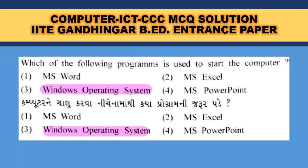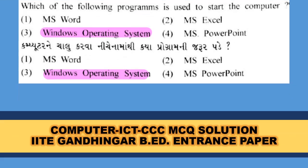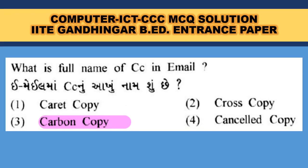Which of the following programs is used to start the computer? The Windows operating system — if you do not have an operating system, the computer will not start, so Windows operating system is the correct answer. Word, Excel, and PowerPoint are application software. What is the full form of CC in email? It is Carbon Copy.